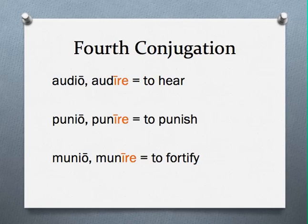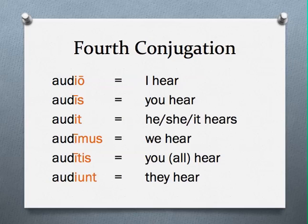The last conjugation is identified by an infinitive that ends in a long -IRE. Audire, punire, and munire are all fourth conjugation verbs. These verbs are conjugated in the following way: IO, IS, IT, IMUS, ITIS, IUNT.